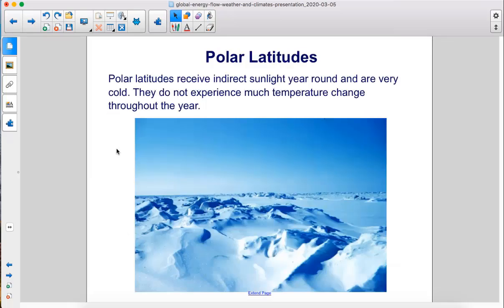Polar latitudes receive indirect sunlight year-round and are very cold. They do not experience much temperature change throughout the year.